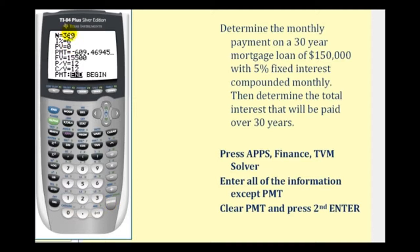I represents the interest rate, which is 5%. PV represents the present value of the loan — that's $150,000. We'll come back to the payment amount. The future value when the loan is paid off should be $0. And P/Y represents the number of payments per year. We're paying monthly, so it's going to be 12.